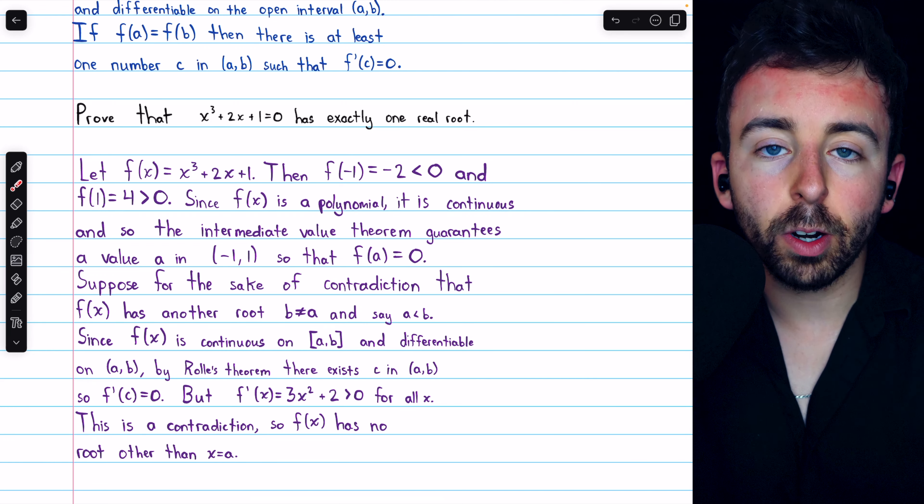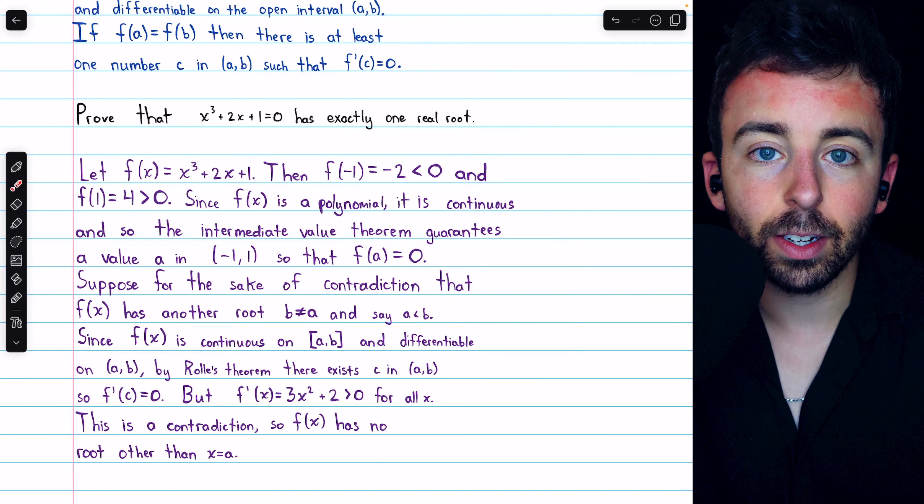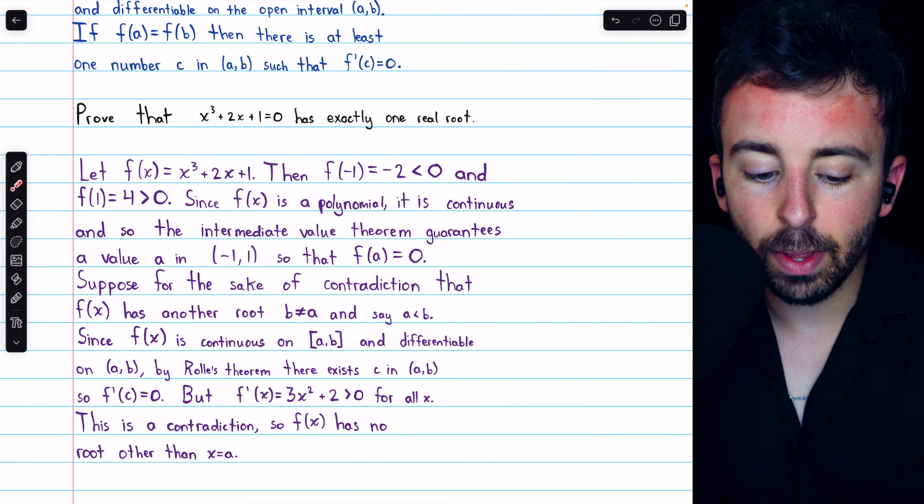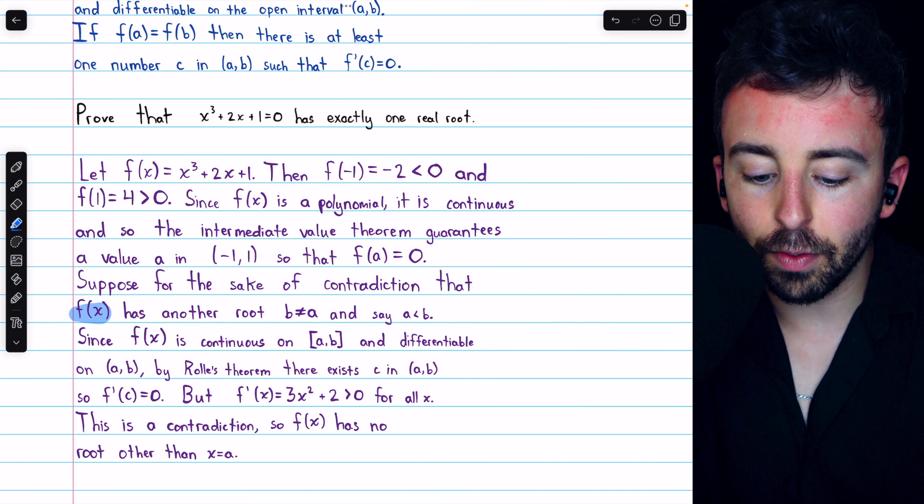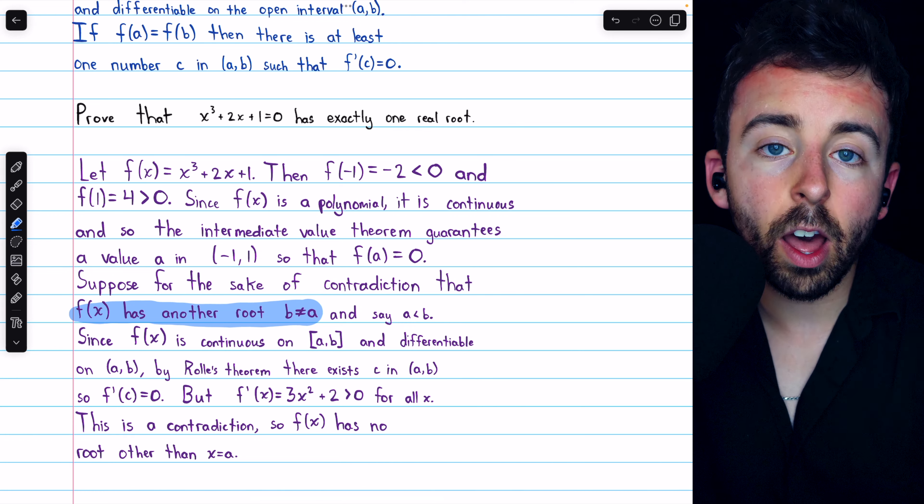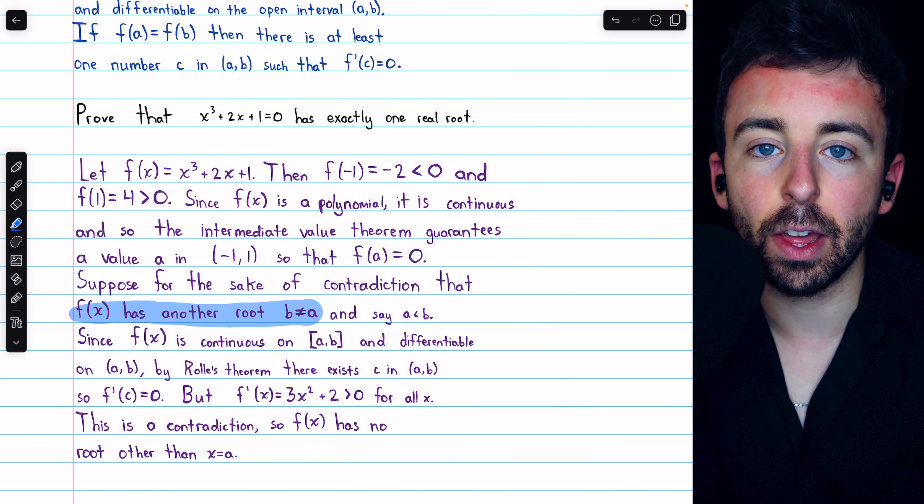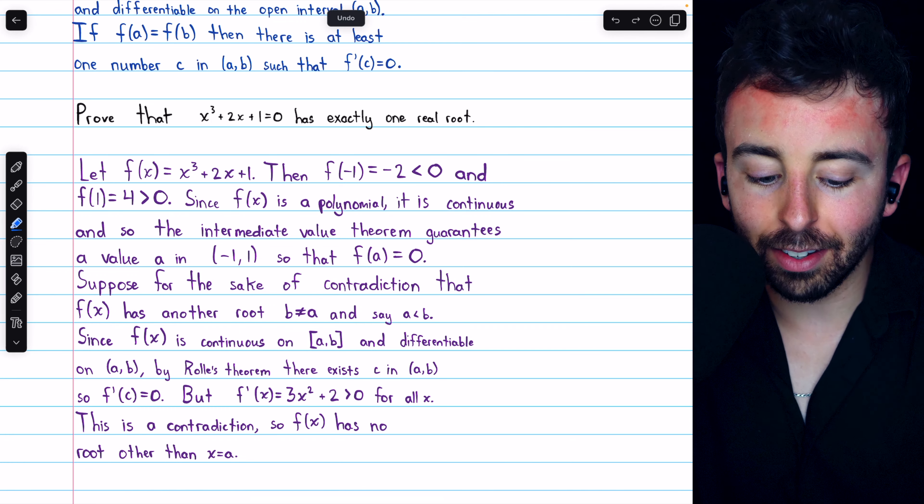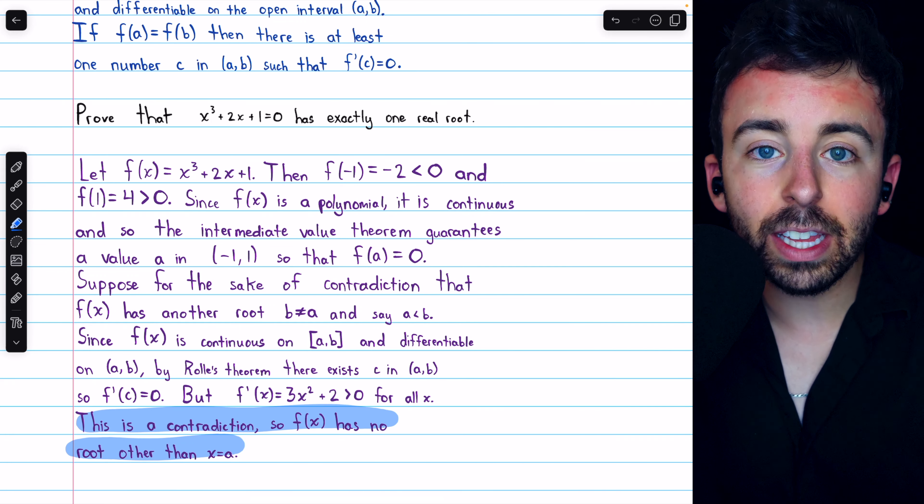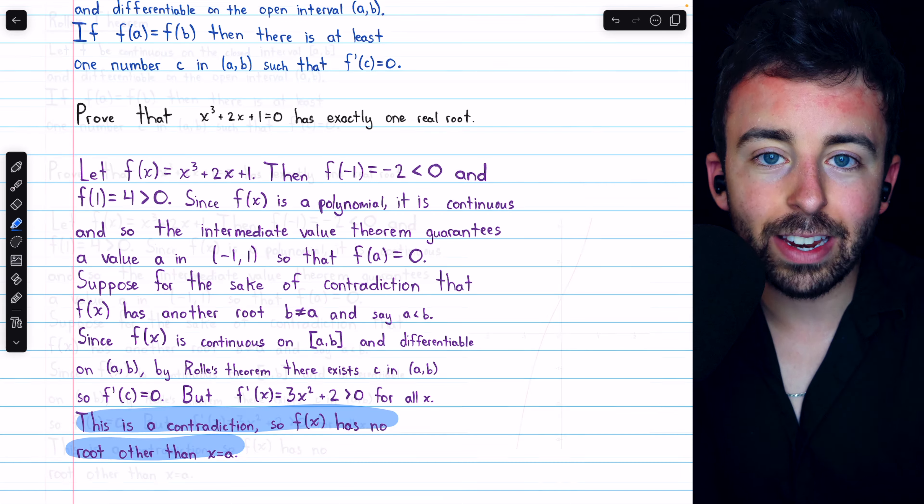Hence, Rolle's theorem forces a contradiction. And the only reason we were able to apply Rolle's theorem is because we assumed that f of x had another root not equal to a. Hence, it must be that it doesn't have another root not equal to a. And so, x equals a is the only root of this cubic equation.